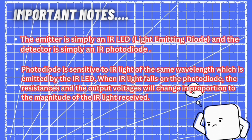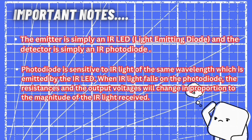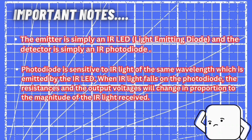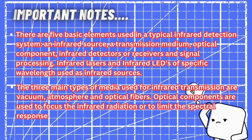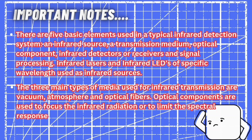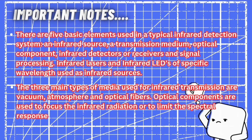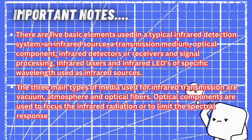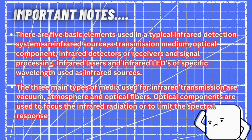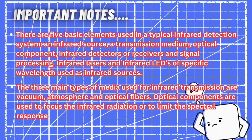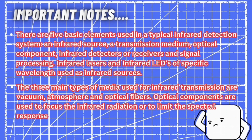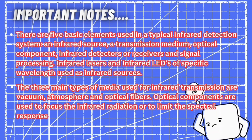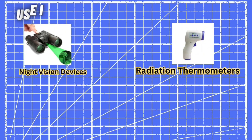Here are some important notes on IR sensors. The photodiode is sensitive to IR light of the same wavelength emitted by the IR LED. When IR light falls on the photodiode, the resistance and output voltage change in proportion to the magnitude of IR light received. There are five basic elements in a typical infrared detection system: an infrared source, a transmission medium, an optical component, infrared detectors or receivers, and signal processing. Infrared lasers and IR LEDs of specific wavelengths are used as infrared sources. The three main types of media used for infrared transmission are vacuum, atmosphere, and optical fibers. Optical components are used to focus the infrared radiation or limit the spectral response.